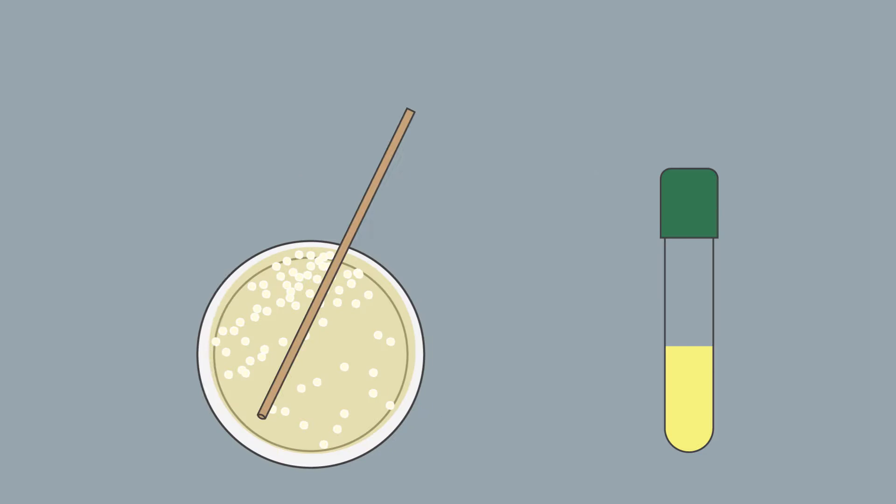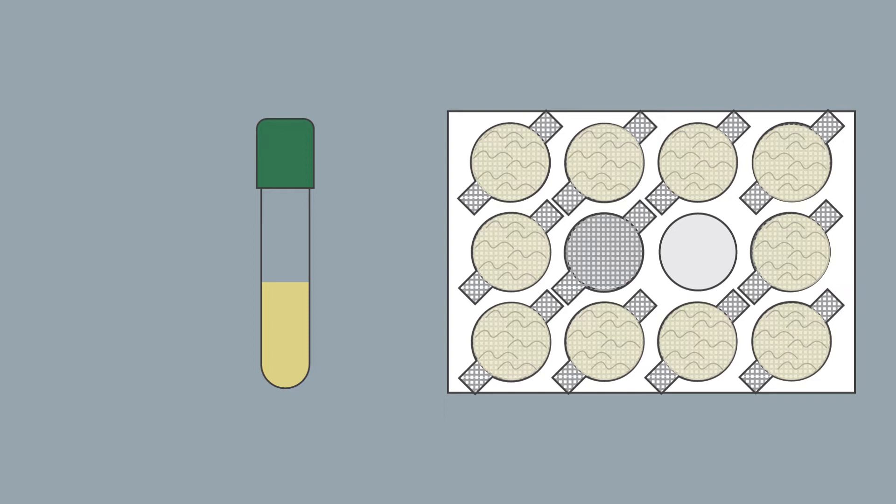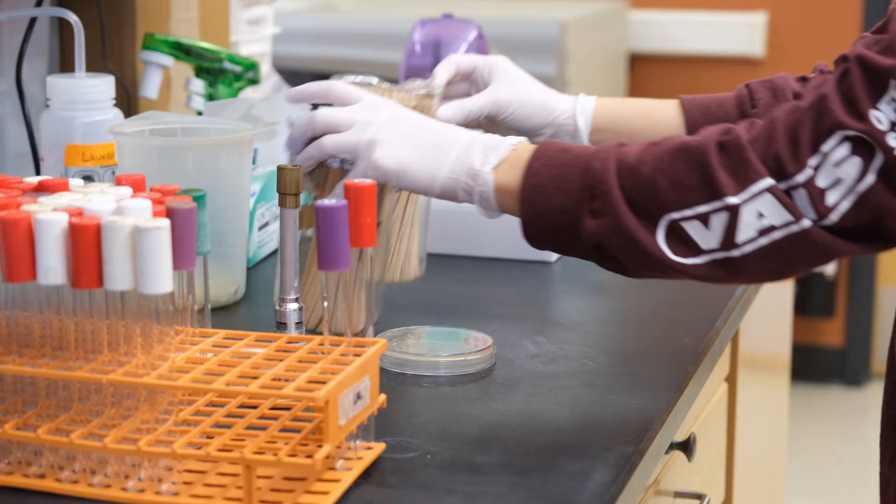So briefly, we're going to start some LB cultures of bacillus subtilis. Once those have grown up a bit, we'll use them to inoculate 12-well plates prepared with MSGG medium, which is a minimal medium, and a mesh insert. The mesh allows you to pick up the biofilm for sampling once it's grown. And then at the end of the video, we'll set up our biofilms to start growing.